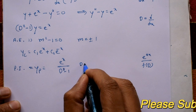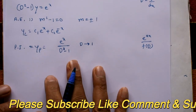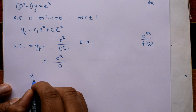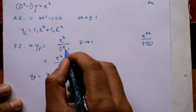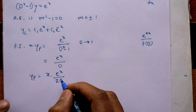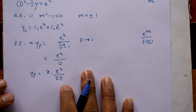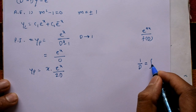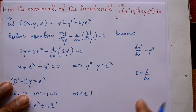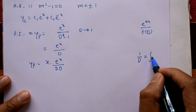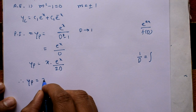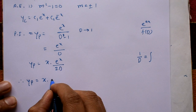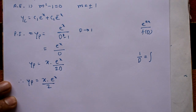Putting D = 1: eˣ divided by (1² - 1) gives 1 - 1 = 0, so the denominator is zero. In this case, multiply by x and differentiate the denominator to get 2D. Since 1/D is the inverse differential operator meaning integration, the particular integral is x times the integral of eˣ divided by 2, which gives x·eˣ/2.